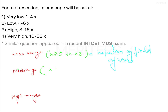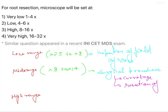In the mid range, magnification goes from 8x to 14x. This is generally used for surgical procedures in dentistry, including curettage of infected or granulation tissue. The 8-14x range is also used for root tip resection and for root end filling in microsurgery.